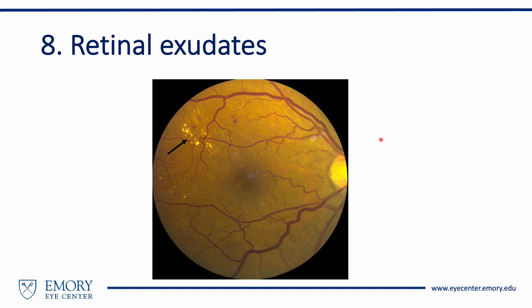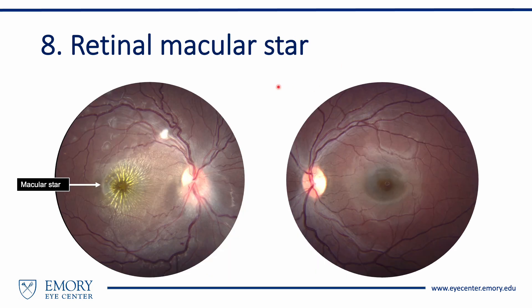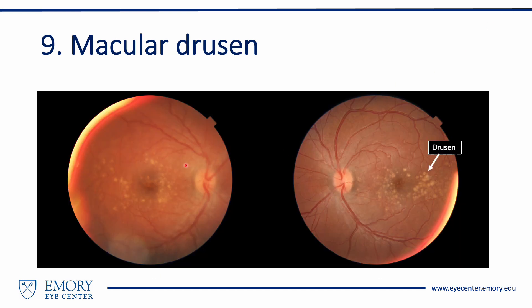Retinal exudates appear as amorphous yellowish material within the retina and are commonly seen in diabetic and hypertensive retinopathy. Observe the impressive retinal exudates in a star-shaped pattern accompanied by disc edema in the right eye. This condition is called neuroretinitis and can be caused by a variety of inflammatory conditions such as sarcoidosis, viral infections, syphilis, or cat scratch disease. Confluent creamy spots in the macula of both eyes represent macular drusen, commonly seen in age-related macular degeneration.